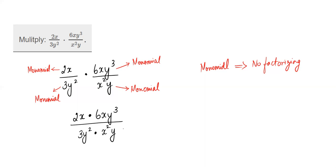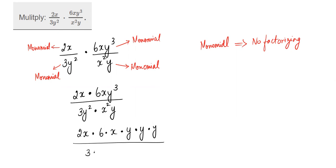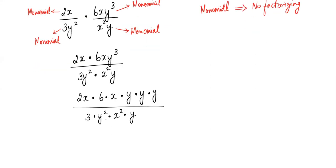We simply multiply them across to bring the two fractions together, but now we have to simplify. We don't factorize using the AC or BC method here, but we do factorize in the sense of expanding powers — for example, y³ becomes y·y·y — so there are no powers remaining. Similarly, 3y² and x² get expanded so we can cross-cancel individual factors.